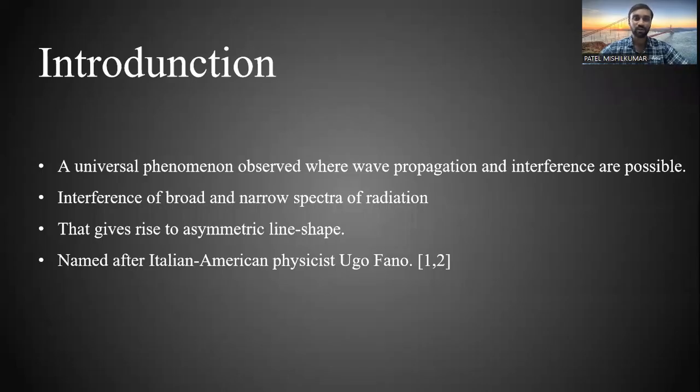Fano resonance is a universal phenomenon which occurs in various branches of science where wave propagation and interference are possible. Fano resonance occurs when interference of broad and narrow spectra of radiation happens, and it gives rise to asymmetric line shape. This phenomenon is named after Italian-American physicist Ugo Fano, who gave the theoretical understanding of this phenomenon.